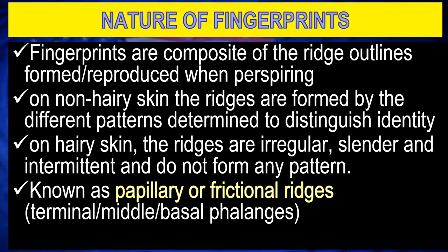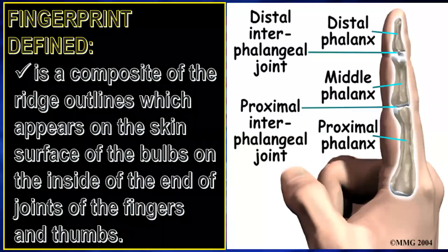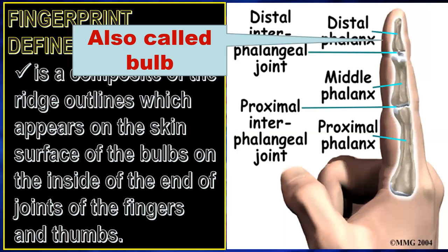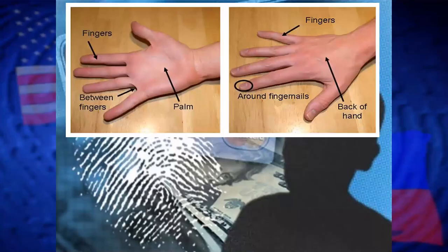They can be found on the terminal phalange, middle phalange, or basal phalange of the fingers. A fingerprint is defined as a composite of the ridges' outlines appearing on the skin surface of the bulbs on the inside of the end joints of the fingers — also called the distal phalange, the bulb, or the terminal phalange. This is on the palmar or inner surface — the non-hairy surface.